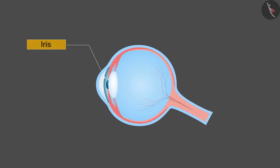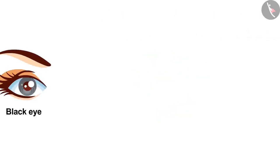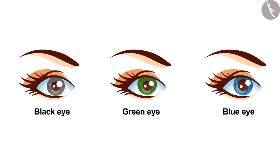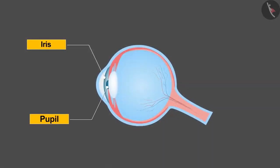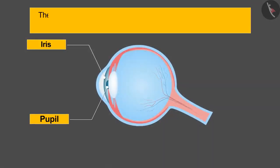After the cornea, the second part is known as iris. You must have seen that someone's eyes are black, or someone's green, or someone's blue. They are actually the color of the iris. In addition, the iris also controls the size of the pupil.